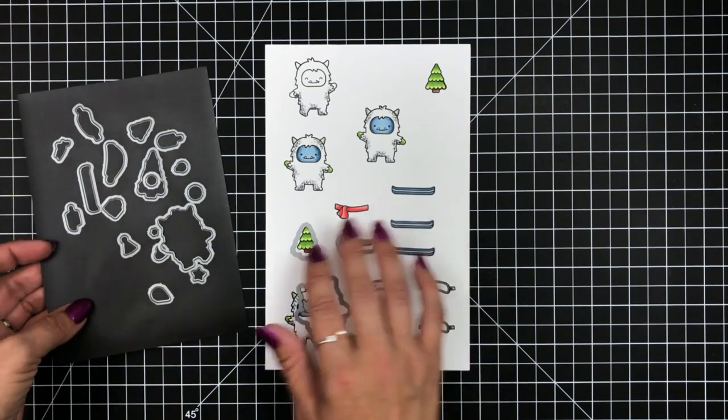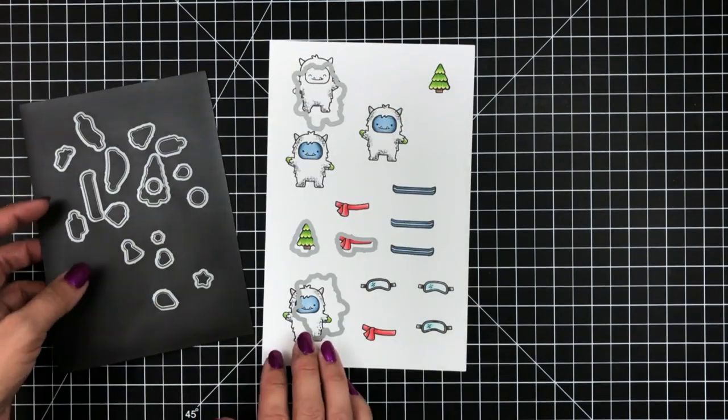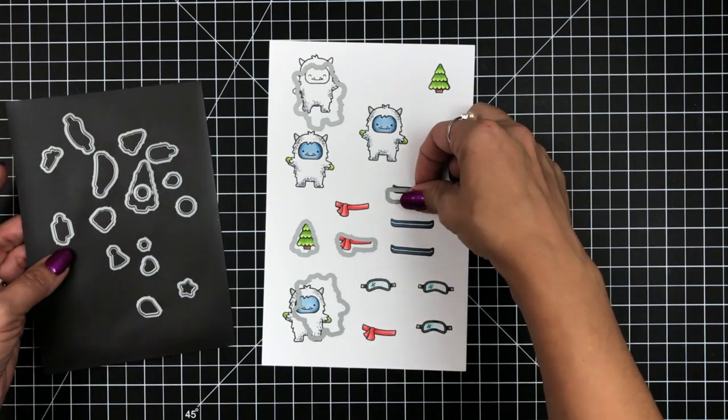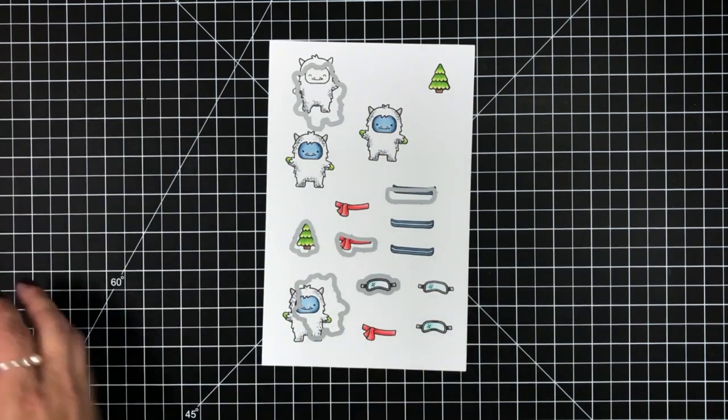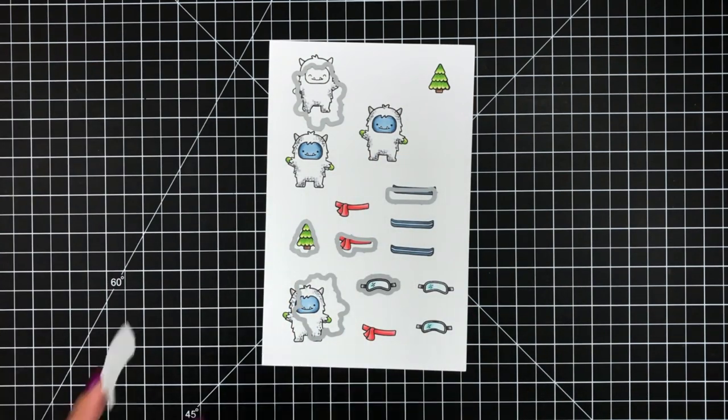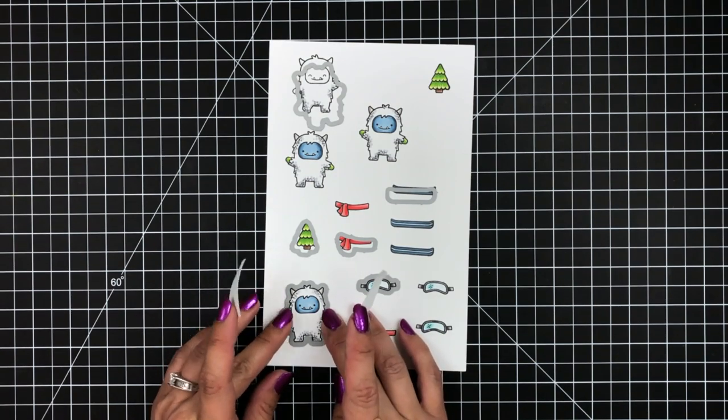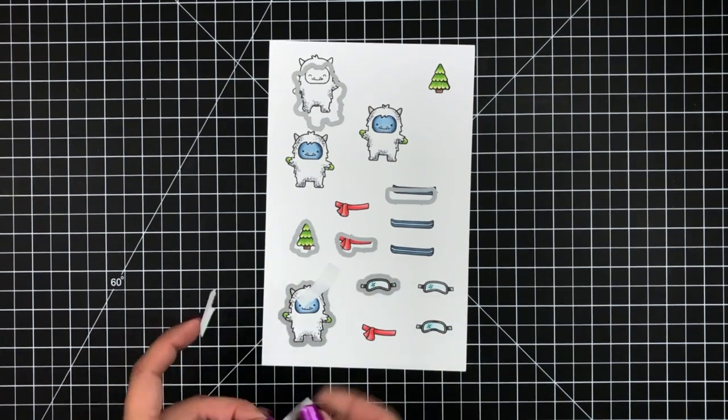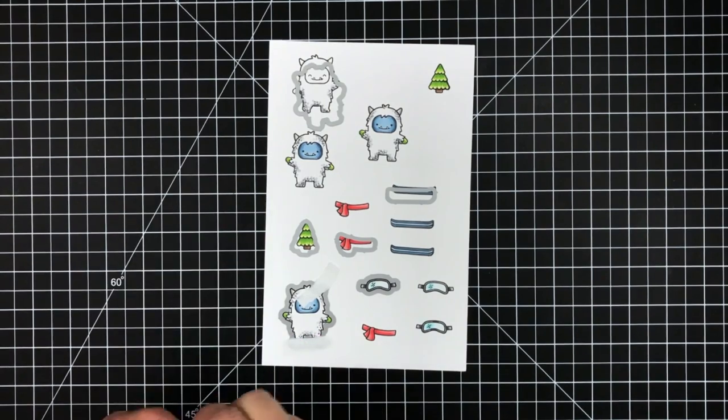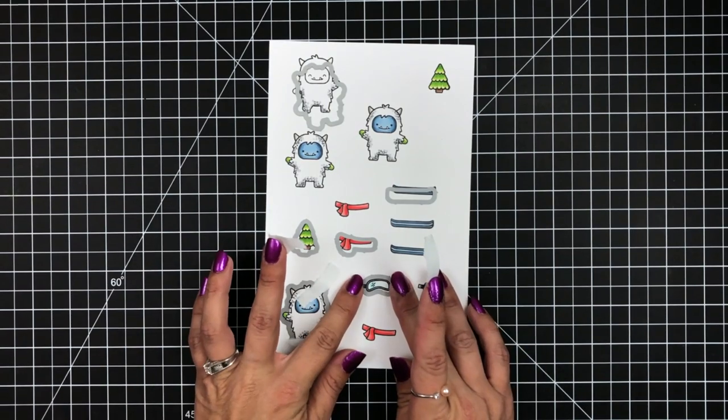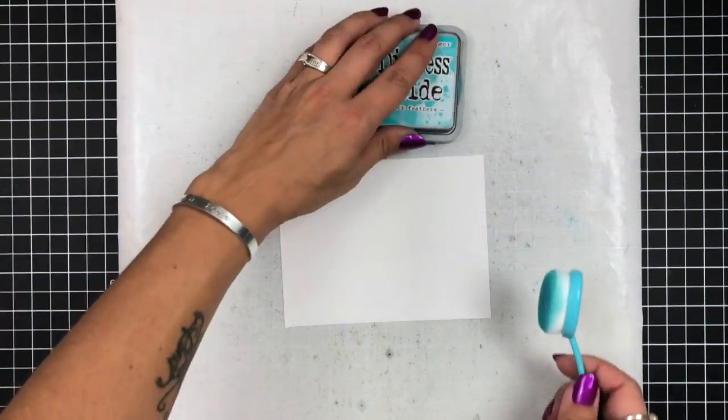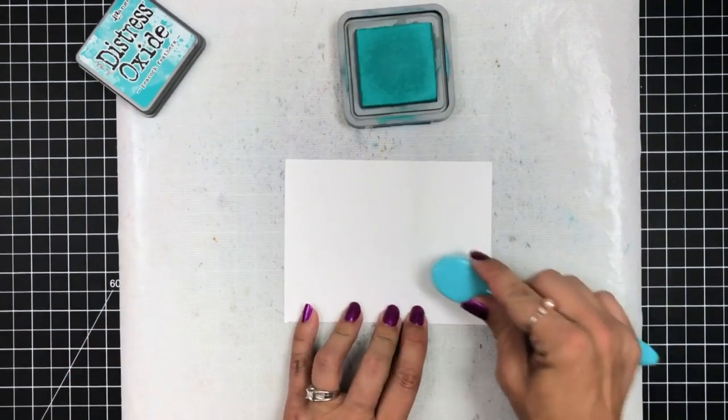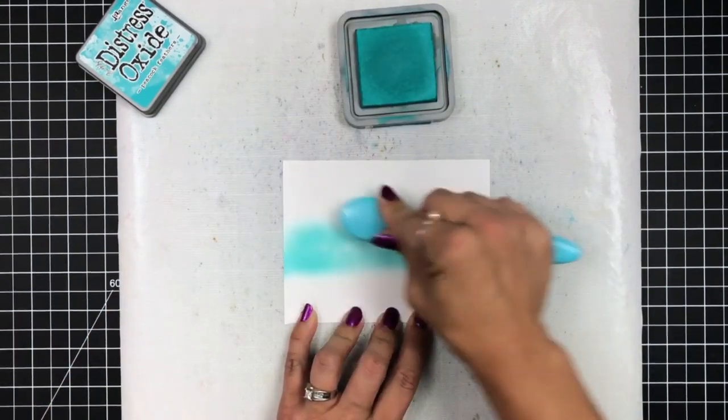Then I'm going to use the coordinating dies from the stamp set. I'll have to cut these out a couple times to get all of the images. I'm going to hold those in place with some low tack tape and run this through my die cut machine. You can see that top Yeti, I only colored the feet because that's going to be the one where his feet are sticking out of the snow bank.